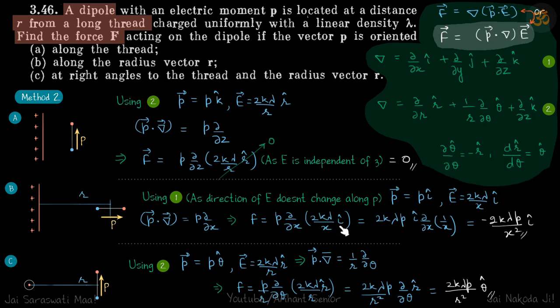So in this equation 2k lambda i are constants, so we will take them out. Inside will be left with d by dx of 1 by x, which will give the answer minus 2k lambda p by x square i cap. So the force will be repulsive. So here i cap is a constant because in Cartesian coordinates when we select our xyz then these unit vectors are constant. But here in polar coordinates they change. So we will see in the third case how that affects us.